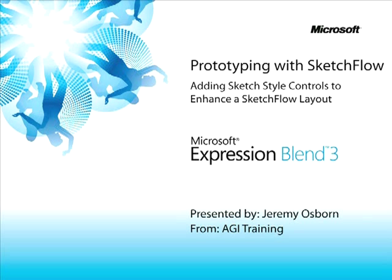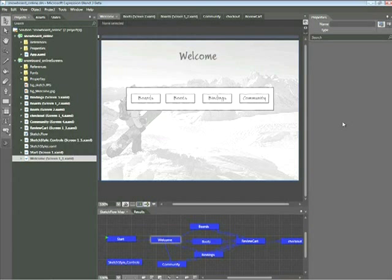This snippet is Adding Sketch Style Controls to Enhance a Sketch Flow Layout. My name is Jeremy Osborne, presenting from AGI Training for Microsoft. In this snippet, you'll learn how to add interactive controls to your online snowboard application. Concepts covered include adding divisions to your screen with sketch rectangles, as well as adding text and combo boxes to simulate an online form.